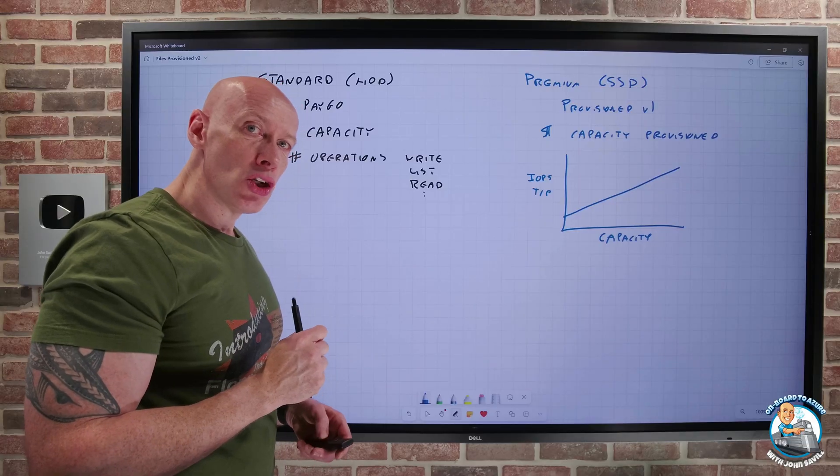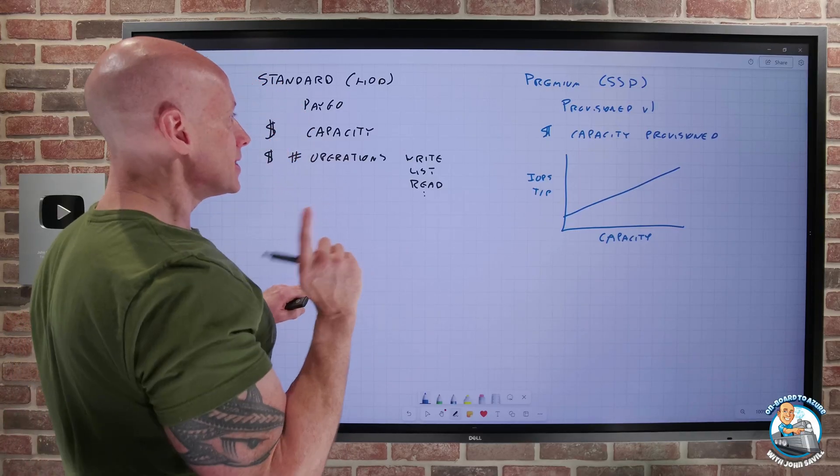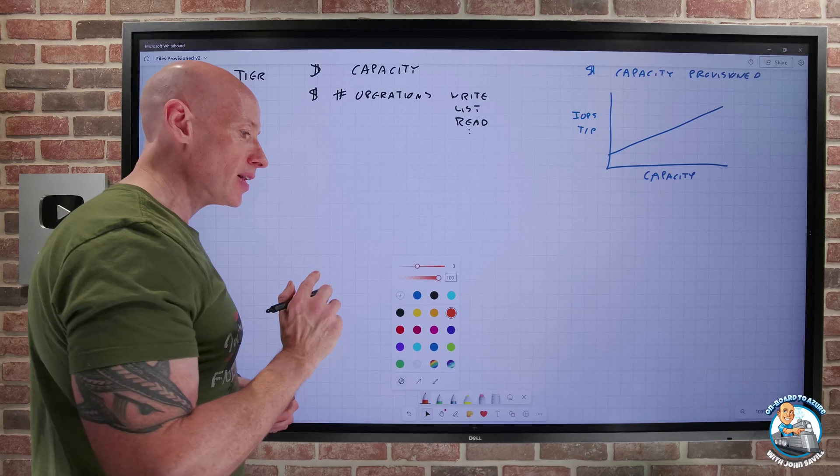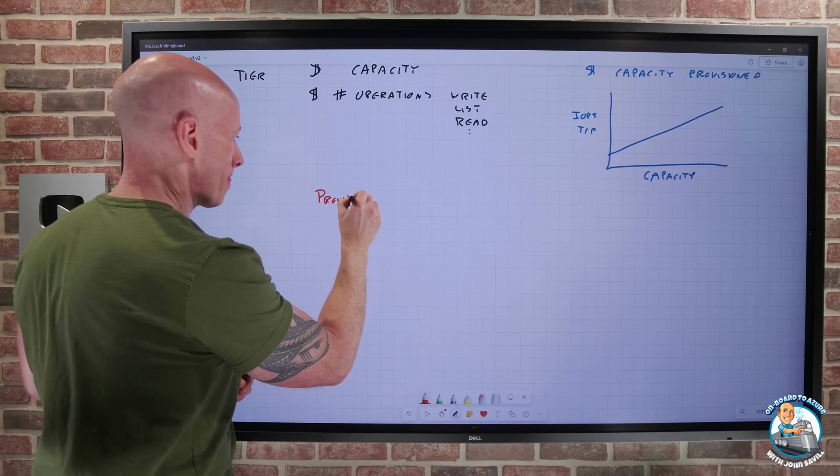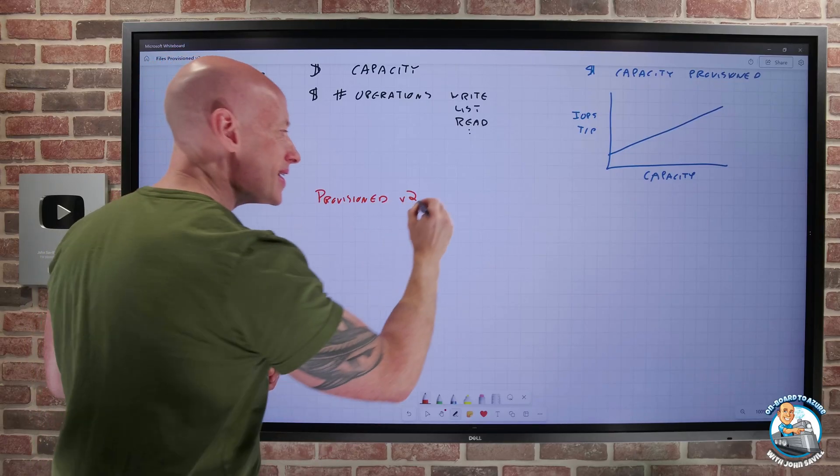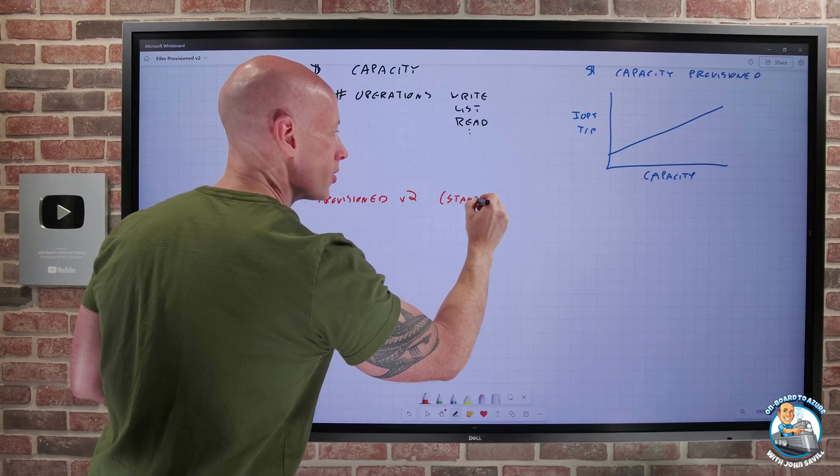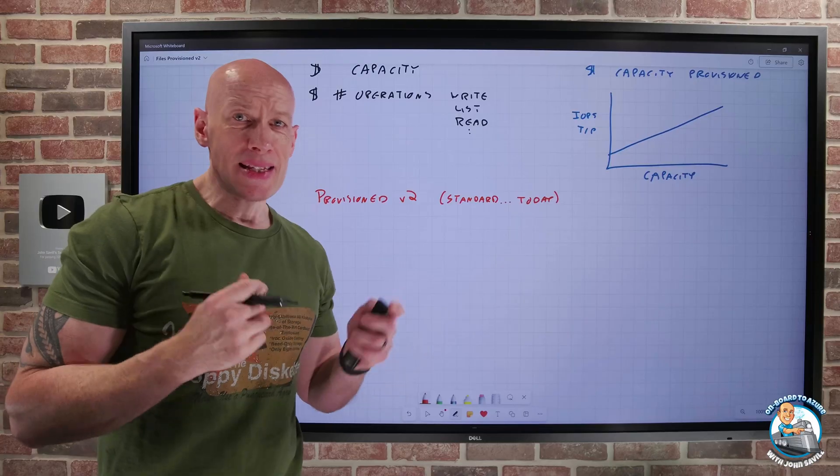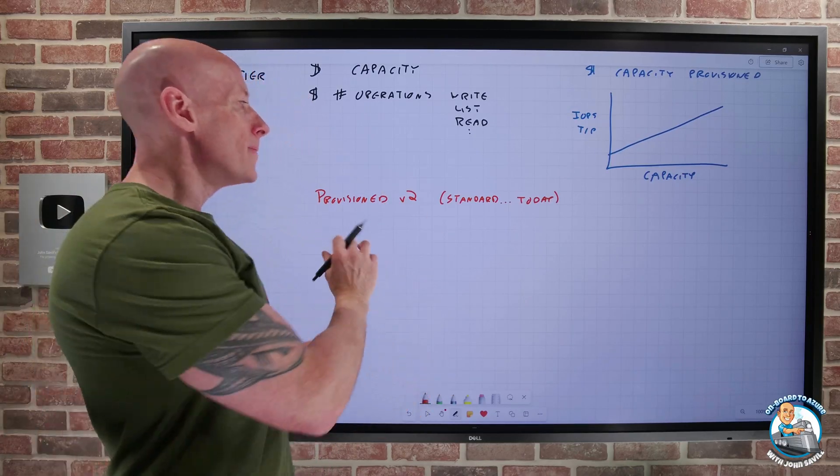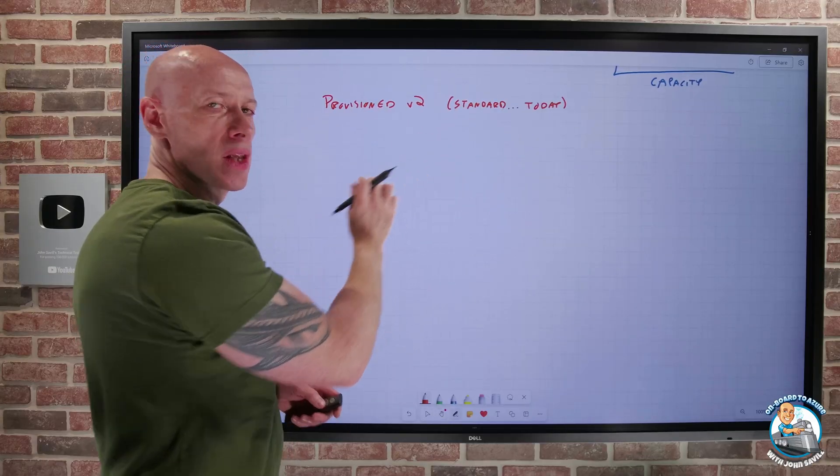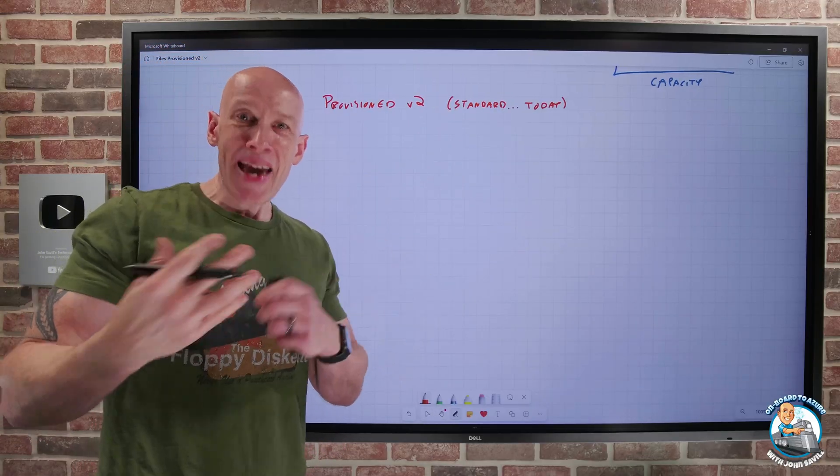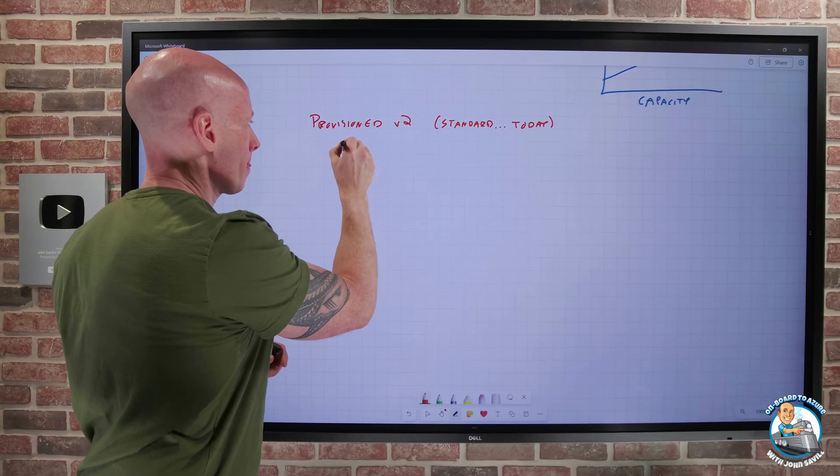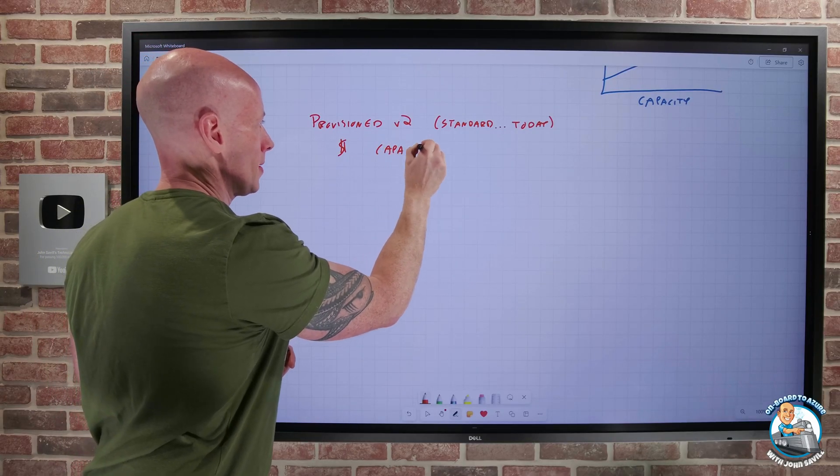So what we have now is a new V2 provisioned billing option. Now today, this V2 only applies to the standard. So now what I've got is my provisioned V2. But it is only that standard, the hard disk drive. But I'm going to say today, because absolutely, this is something that's going to get planned for premium as well. I don't know exactly when that's going to be, but expect to see this expand into the premium world.